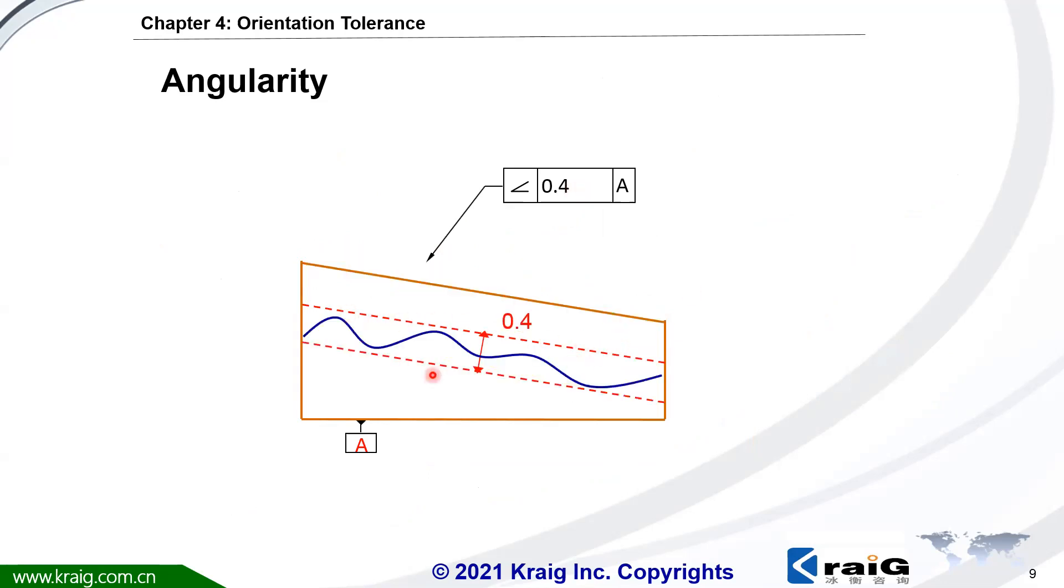The tolerance zone could float up and down, but it should always be at a specified angle, such as 30 degrees in our previous drawing. This tolerance zone can float up and floating down.